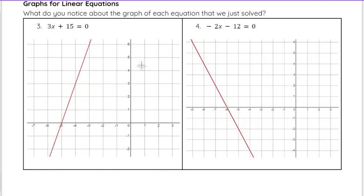Now I want you to take a look at these exact same equations. So 3X plus 15 equals 0, and negative 2X minus 12 equals 0, and we got X equals negative 5 and X equals negative 6 as our solutions when we solved algebraically. But to show you the graph of those equations, notice where the graph crosses the X axis. So you see on this first one, X equals negative 5 is what we solved for algebraically, and negative 5 is where it crosses the X axis when you look graphically.